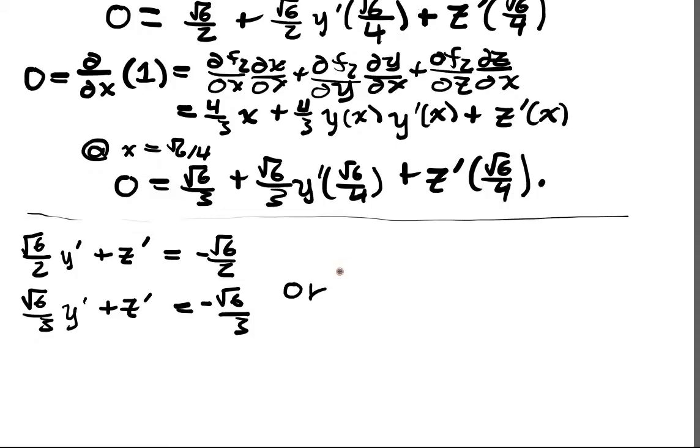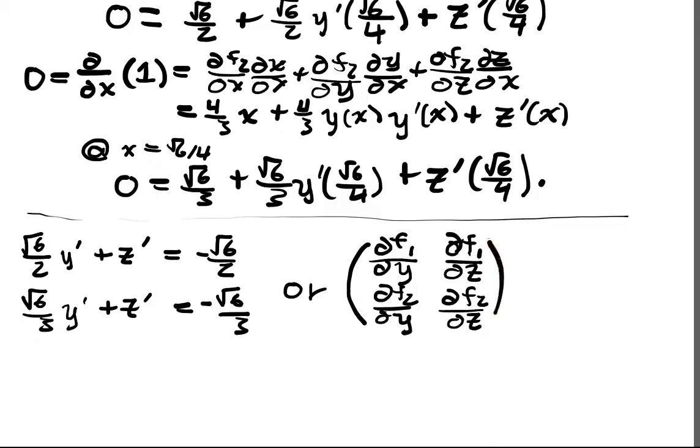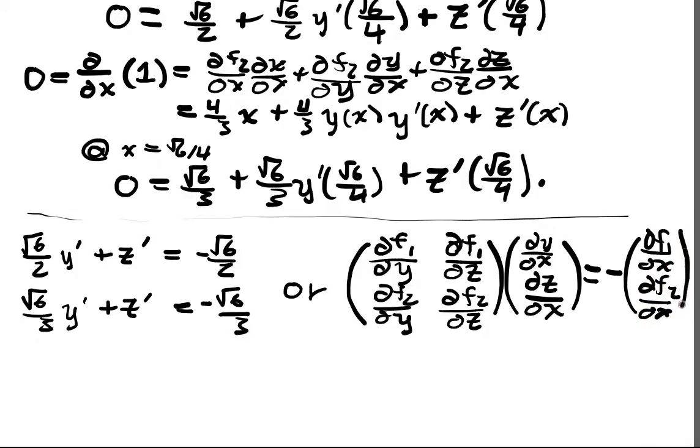Or if we were thinking about this in terms of symbols, we had the matrix [∂f₁/∂y, ∂f₁/∂z; ∂f₂/∂y, ∂f₂/∂z] multiplied by [dy/dx; dz/dx] equals negative [∂f₁/∂x; ∂f₂/∂x]. And we wanted to solve for dy/dx and dz/dx at that particular point.